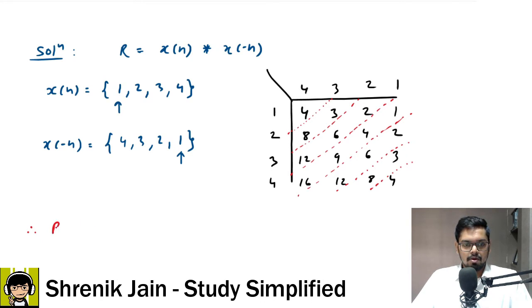Therefore, I will say my autocorrelation function has the value what? 4, then 8 plus 3 which is 11 and then 12 plus 6 plus 2 which is 20, and then we have 16 plus 9 plus 4 plus 1, so 10 plus 20, 30. Similarly, next we have 12 plus 6 plus 2 that comes out to be 20, then 8 plus 3 that comes out to be 11 and then we have 4, okay?